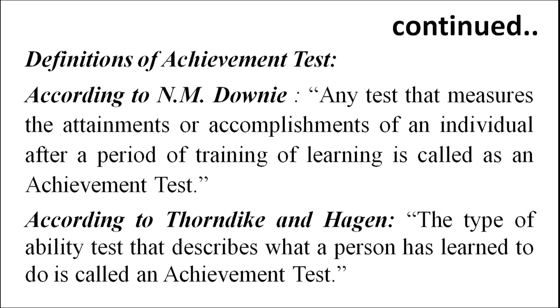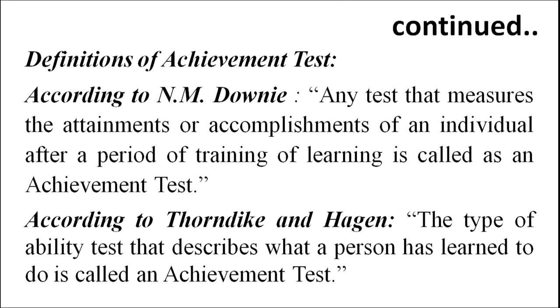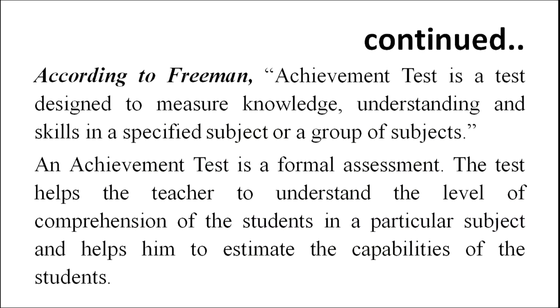Definition of achievement test: According to N. M. Donne, any test that measures the attainments or accomplishments of an individual after a period of training or learning is called an achievement test. According to Thorndike and Hagen, the type of ability test that describes what a person has learned to do is called an achievement test. According to Freeman, an achievement test is a test designed to measure knowledge, understanding and skills in a specified subject or a group of subjects.